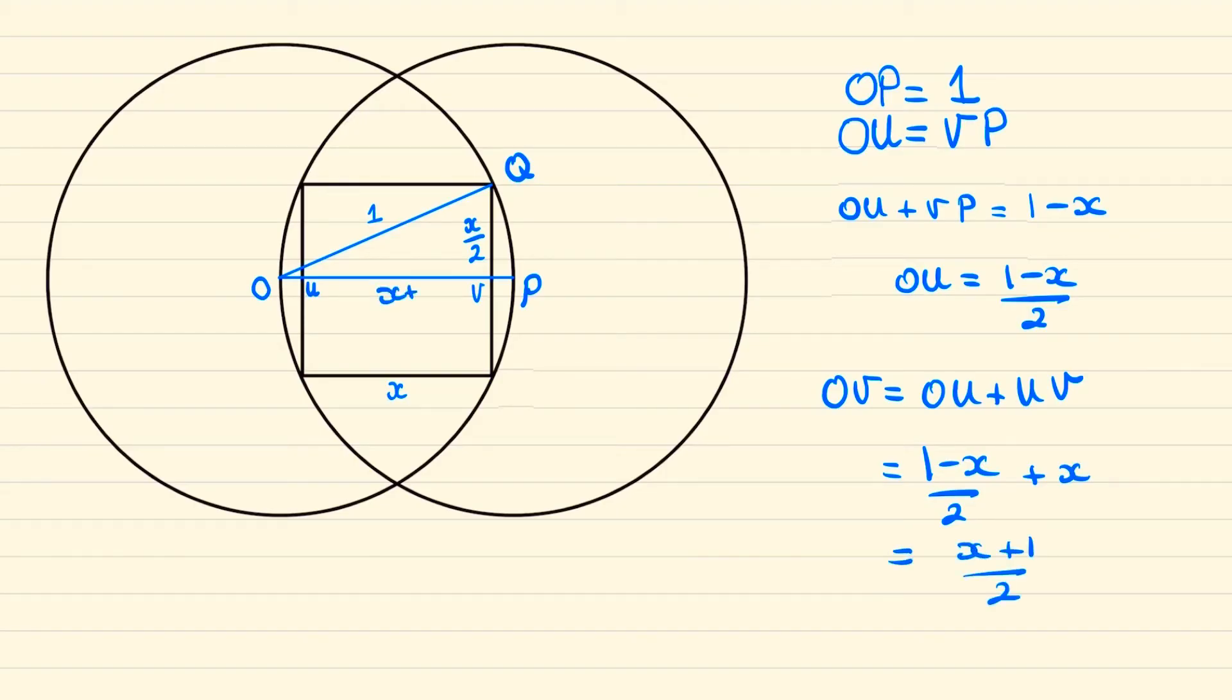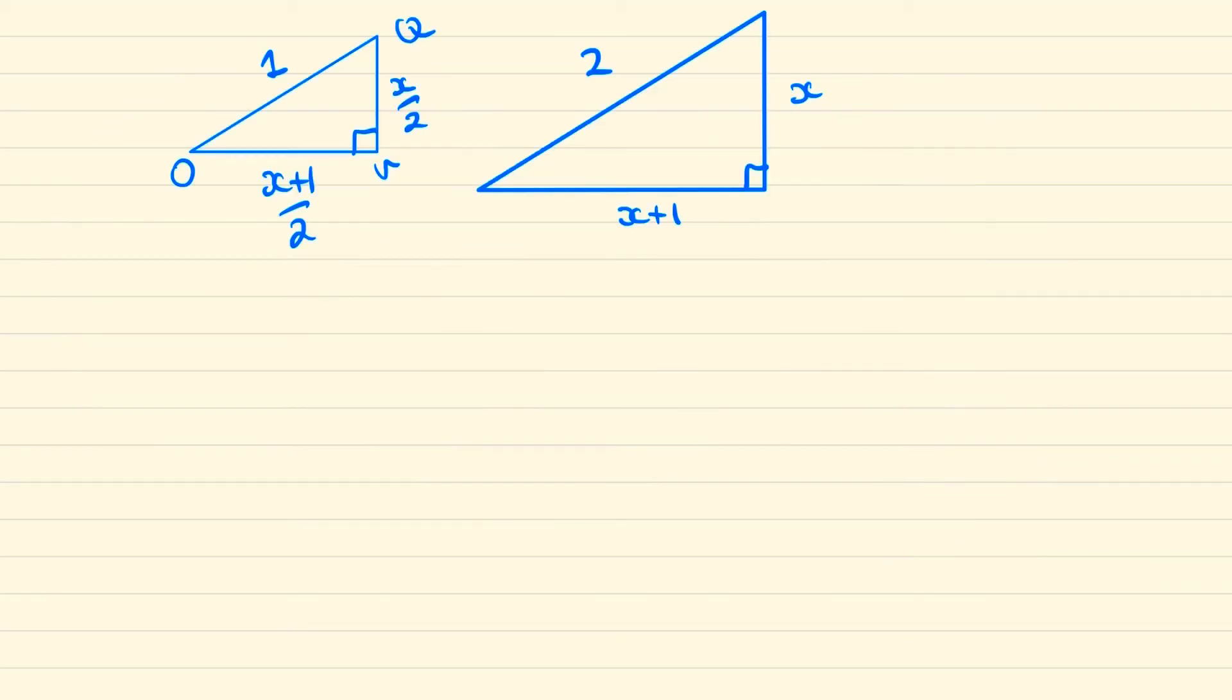We have the following right angle triangle o q v and we can double each of those lengths to make our life a little bit easier. Applying Pythagoras theorem, we can say that x plus 1 squared plus x squared equals 4. This simplifies to 2x squared plus 2x minus 3 equals 0.